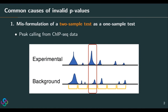Today I'm going to talk about three common causes of invalid P-values I have seen in the field. The first cause is very interesting — it's about the misformulation of a two-sample test as a one-sample test. I'm going to use ChIP-seq data analysis peak calling as an example. Here in this illustration, we can see that we have divided the genome into bins. In this red bin, we have a count in the background sample, the negative control, and a count in the experimental sample from the condition of our interest. What we want to do is compare the two counts.